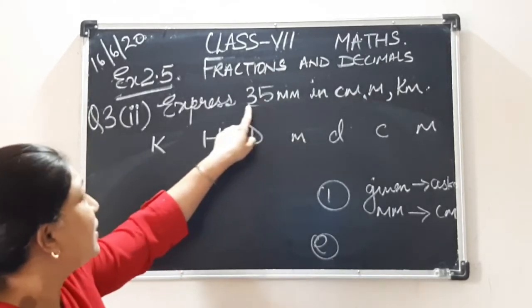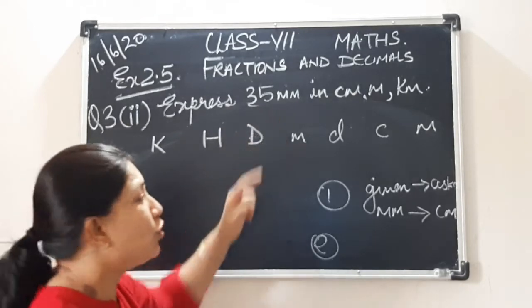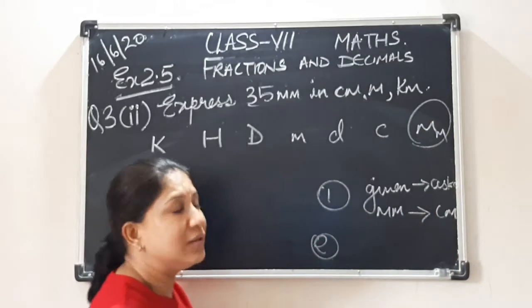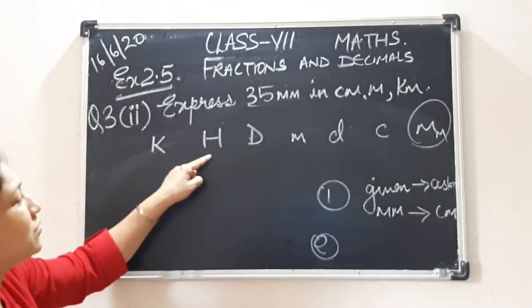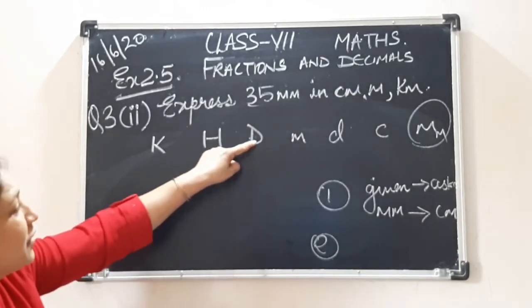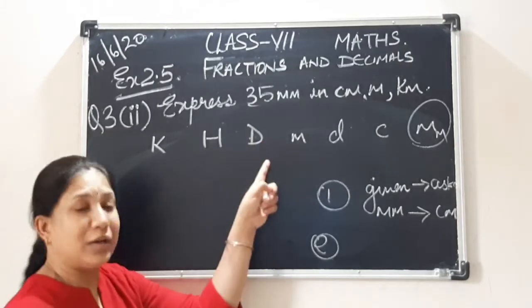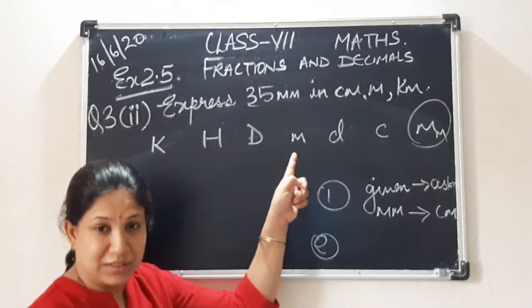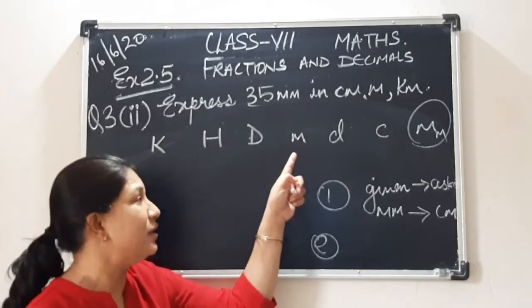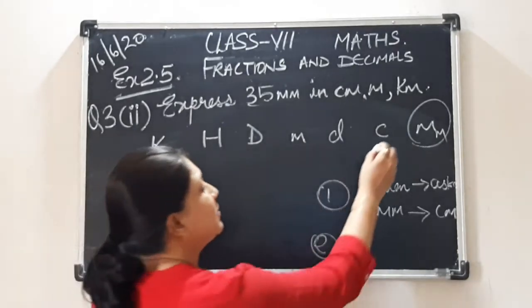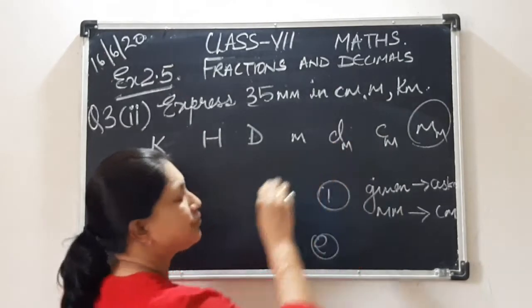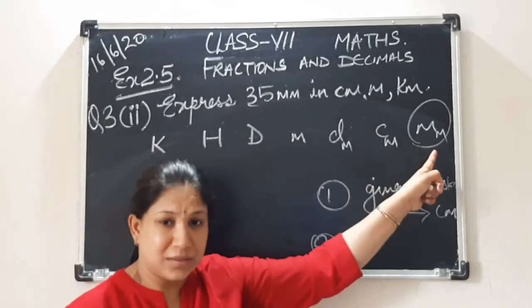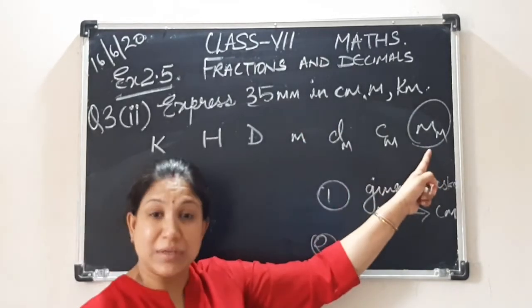We are given in millimeters. So we will start our journey from millimeters. See, kilometer, hectometer, decameter (it is written as DA). Just to avoid confusion, I am writing it in capital letter. This is meter, the SI unit of length, decimeter and centimeter. Is it clear?